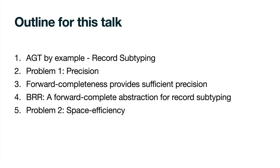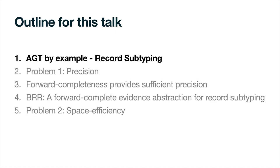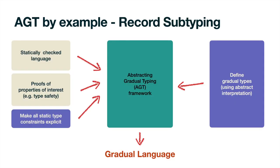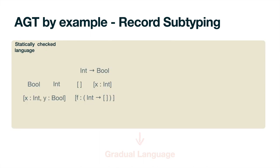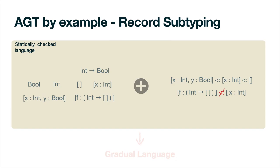For the rest of our talk, we will dive into more details in five steps, beginning with a more detailed summary of the AGT framework through an example language. AGT can be used to generate a gradual language based on four inputs. First, a static language of interest. In our case, we consider the simply typed lambda calculus extended with booleans, integers, and record types. The type system includes a standard subtyping relation that accepts extra fields and rejects incompatible records.